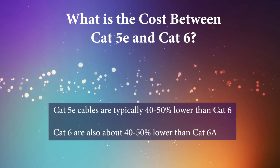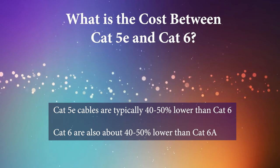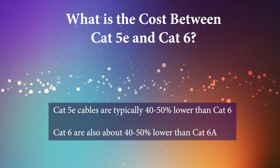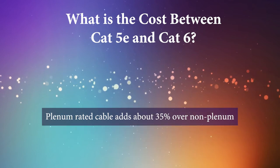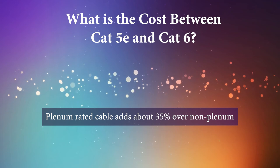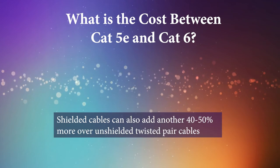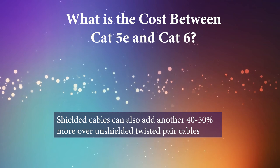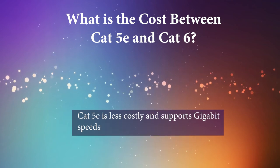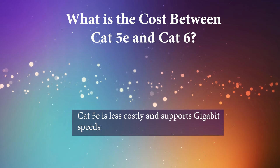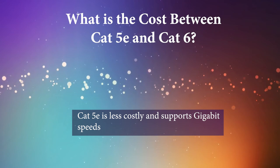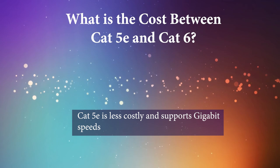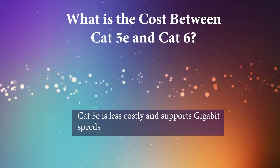Cat 5E cables are typically 40 to 50 percent lower in cost than Cat 6, and Cat 6 is also about 40 to 50 percent lower than Cat 6A. In addition, plenum rated cable adds about 35 percent over non-plenum, and shielded cables can add another 40 to 50 percent more over unshielded twisted pair cables. Even though Cat 6 cabling offers higher performance ratings and is quickly replacing Cat 5E, many home or small office users may still opt for Category 5E due to its cost-effectiveness and ability to support gigabit speeds.